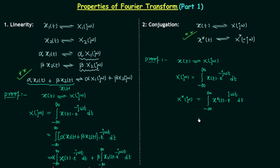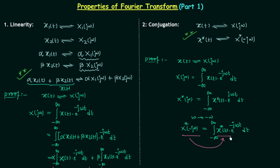Now to get the formula of the Fourier transform we need a negative sign here. For this we will change ω to minus ω, and we have X*(-jω) on the left hand side. On the right hand side we have the integration from minus infinity to infinity of x*(t) multiplied by e to the power minus jωt dt. It is clear that we are having the formula of the Fourier transform, and the Fourier transform is equal to X*(-jω). So x*(t) has the Fourier transform X*(-jω), and in this way we have proved the conjugation property.